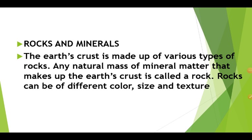So that was all about continental and oceanic crust. Now I am going to explain you rocks and minerals. The earth's crust is made up of various types of rocks. Any natural mass of mineral matter that makes up the earth's crust is called a rock. Rocks can be of different color, size and texture, and may vary from place to place.